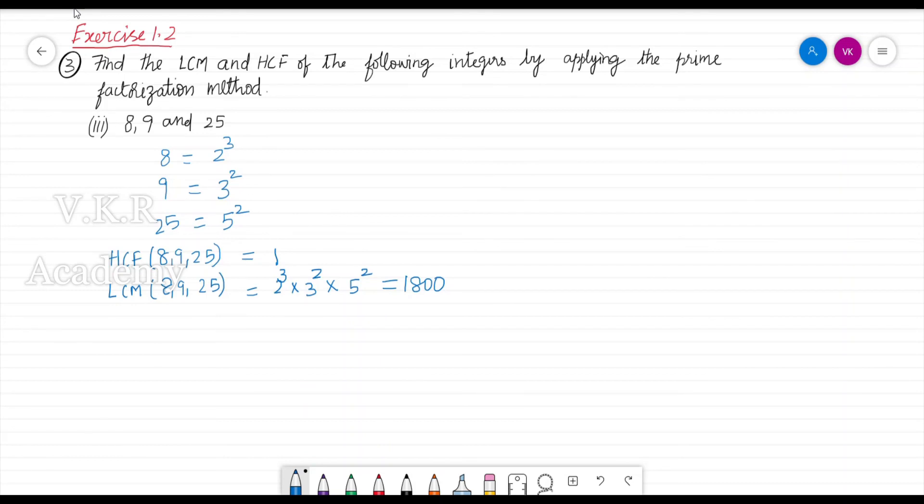So the HCF is 1 and LCM is 1,800. Here again the same rule is applicable. Here all the three numbers are co-primes. Therefore, their HCF is 1 and the LCM is product of the given numbers.